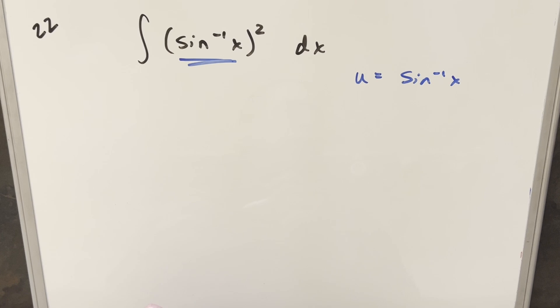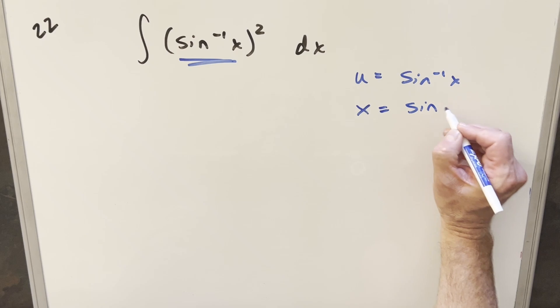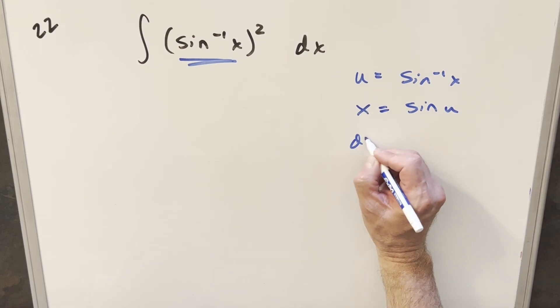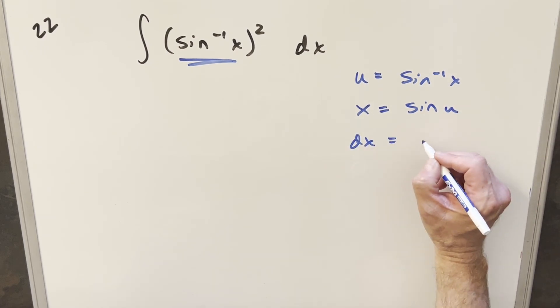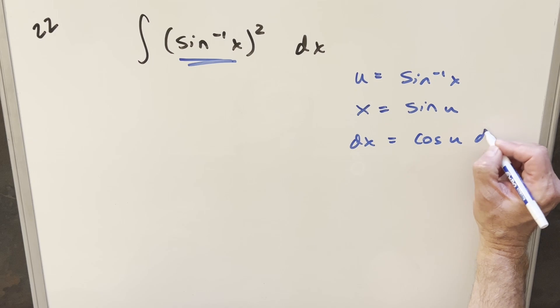So we'll set u equal to arc sine of x. Then if you take sine on both sides, we can isolate x and we get x equal to sine of u. Take a derivative, then dx is going to be just cosine u du.